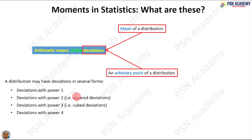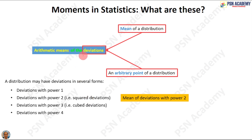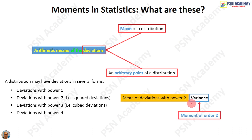Look at deviations with power 2 — squared deviations. If we check the mean of those squared deviations, that is a moment, because a moment is actually the arithmetic mean of deviations. So when we check the mean of the squared deviations, we get a moment, and that moment is commonly known as variance. So variance is actually a moment of squared deviations.